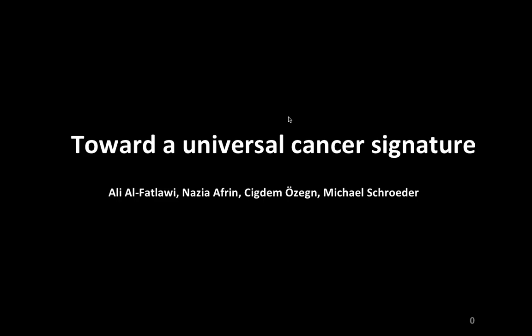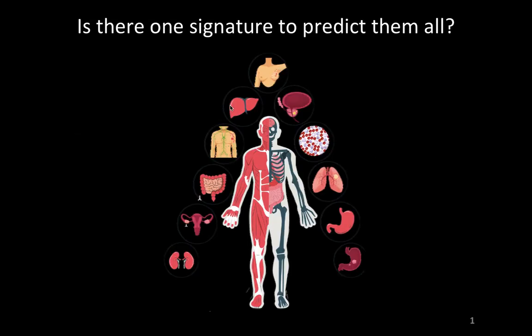Hello everyone, here is Ali Al-Fatlaw from TU Dresden, and I'm happy today to speak about our project that is illustrated in this poster. Our project discusses a fundamental question about cancer in general: is there one signature to protect different kinds of cancers? Although we know that each kind of cancer has its own profile and its own characteristics.